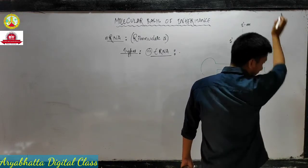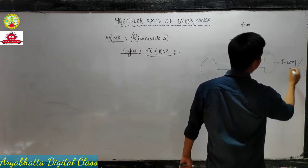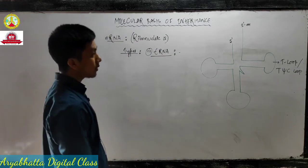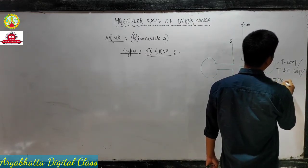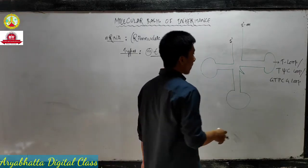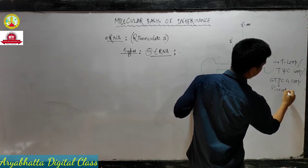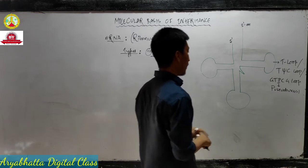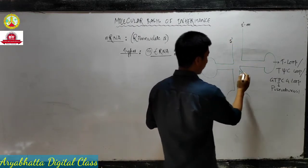The loop on the right side of the diagram we call the T loop. We also call it the T psi C loop - psi is the symbol. It also has another name: the GTTPC loop - guanine, thymine, cytosine, and guanine. The P stands for pseudouridine. So the T loop contains one abnormal nitrogenous base called pseudouridine.